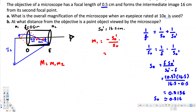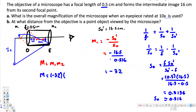Now we have both image distance and object distance. The magnification m1 equals negative 16.5 divided by 0.516, which is approximately negative 32. The overall magnification is m = m1 × m2 = −32 × 10 = −320. The image appears 320 times bigger than the object.